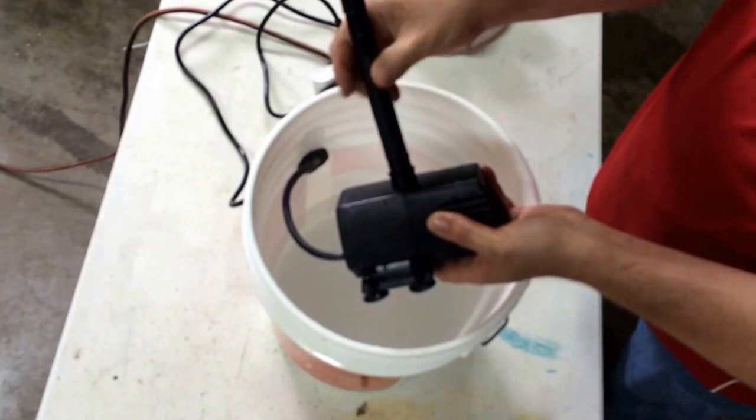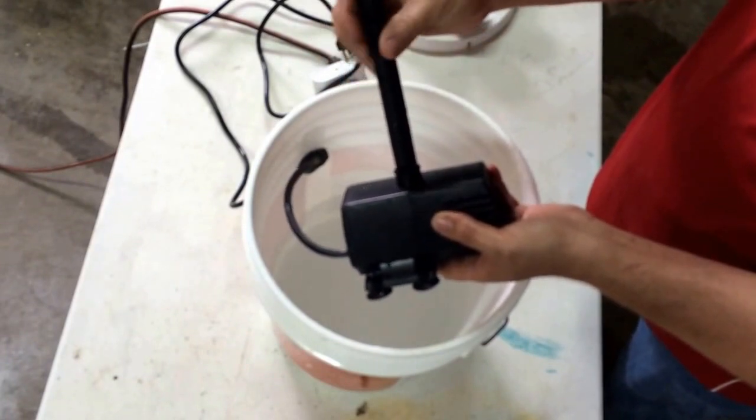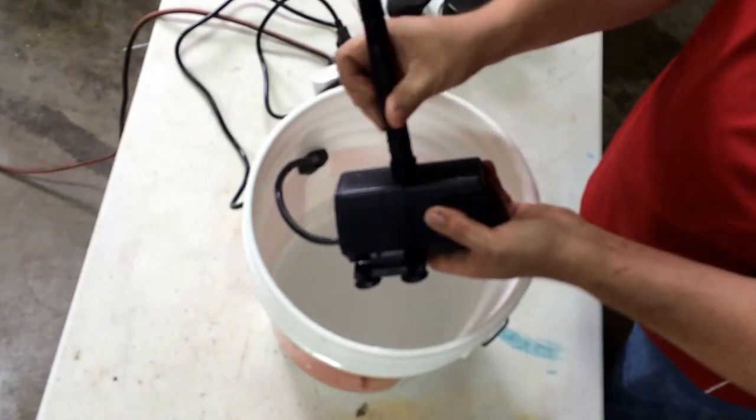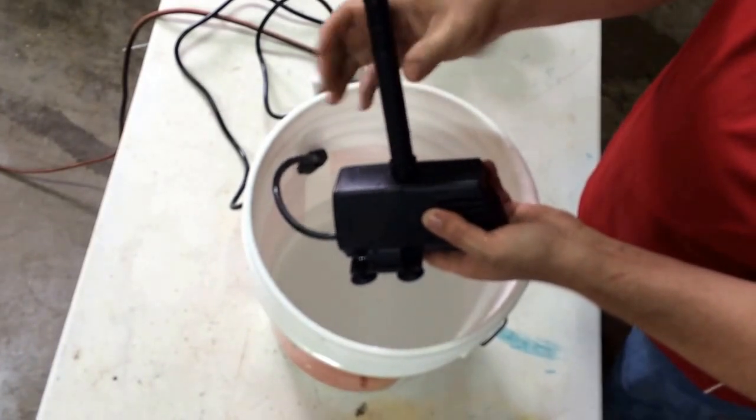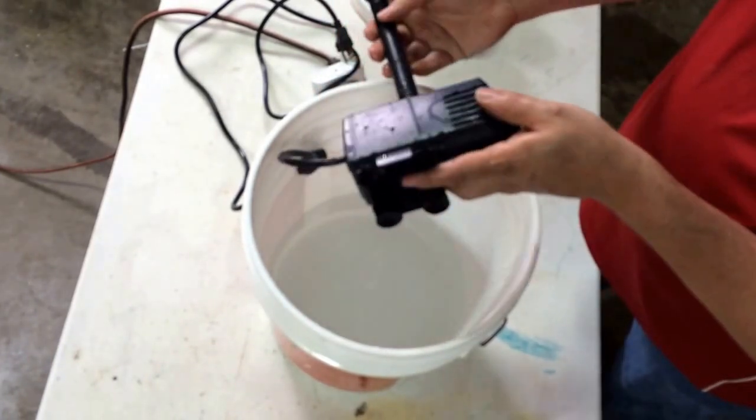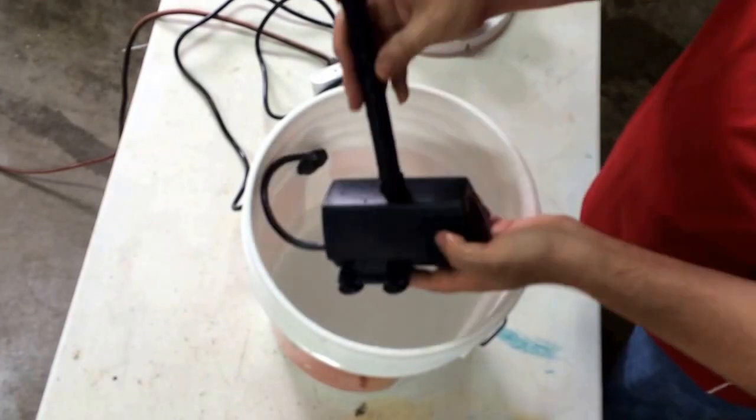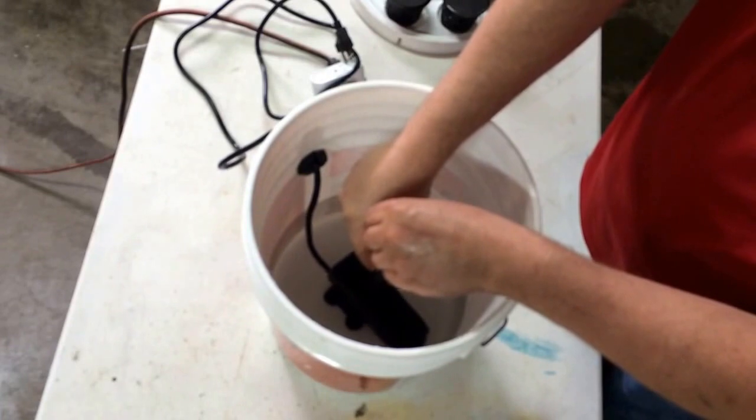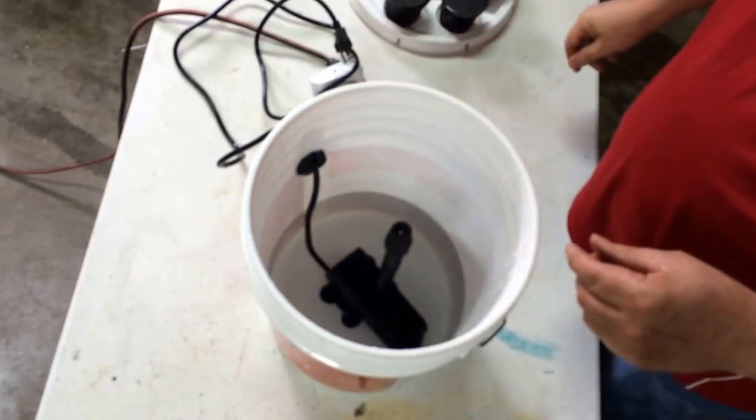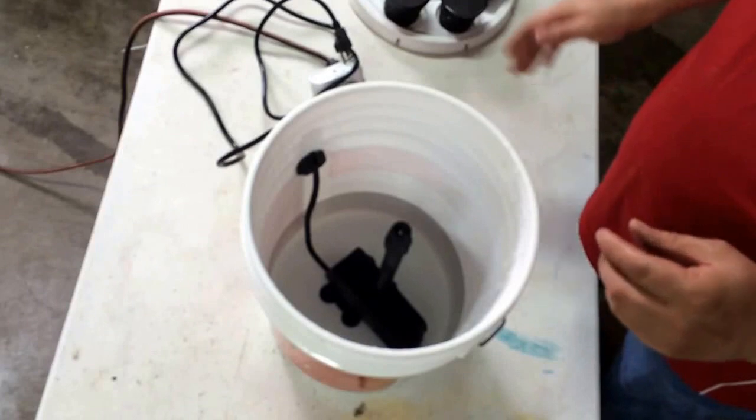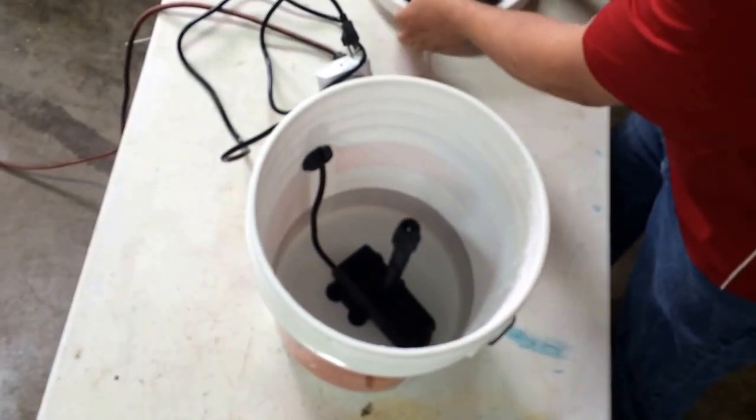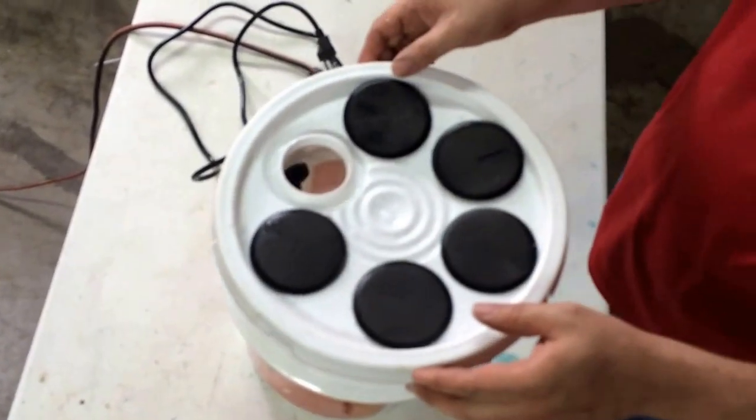So it's simple screw-in connections. This part screws into the pump and then the sprinkler head screws into it. It's got some feet that are plunder. Anyway, it sits inside the bucket and sprays the roots of my plants.